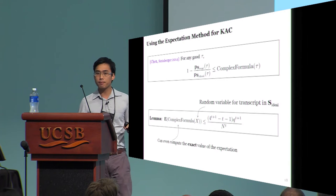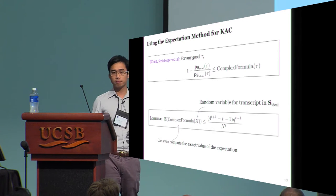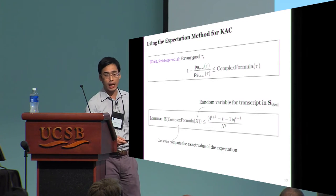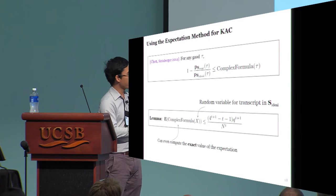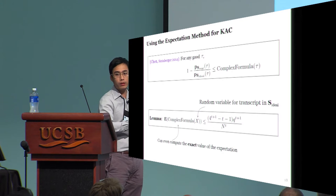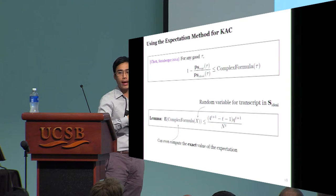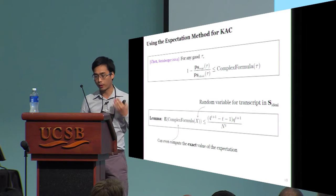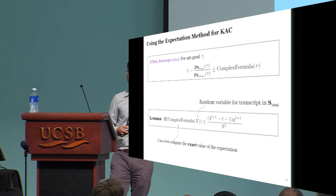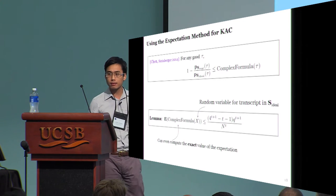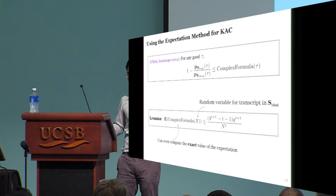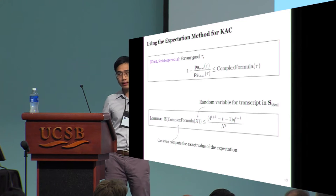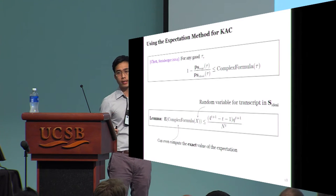To use the expectation method on the KAC problem, recall that Chen and Steinberger already provide us with a very good estimation. And now, all we need to do is to compute the expectation value of this formula. The formula itself is complex, but fortunately, its expectation is fairly easy to compute. And we are done with the single user security of KAC.